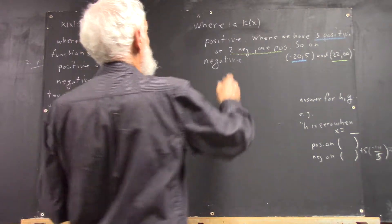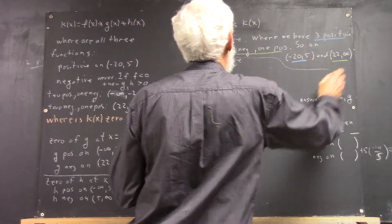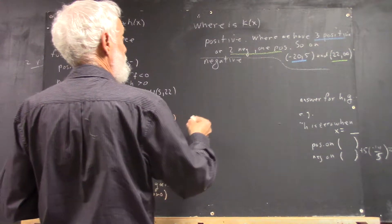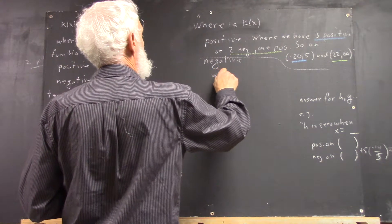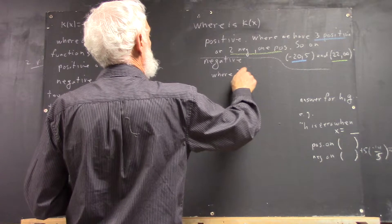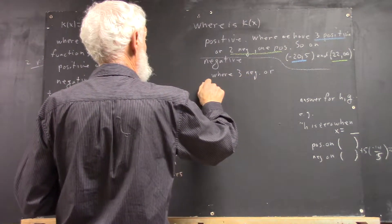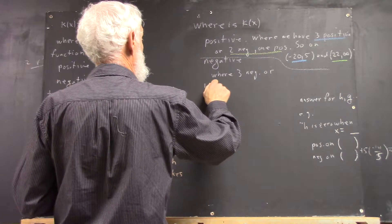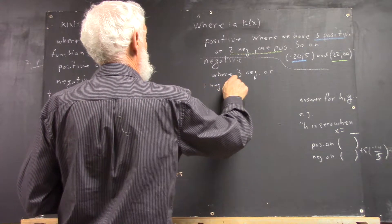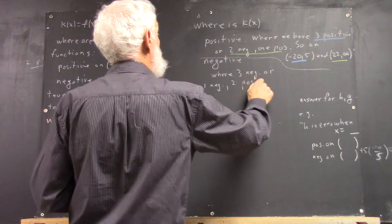Now, where negative? Well, where we have three negative, or one negative, two positive, right?